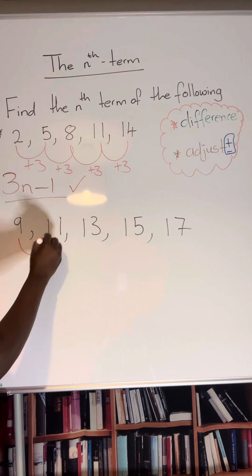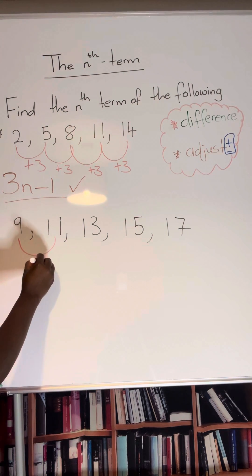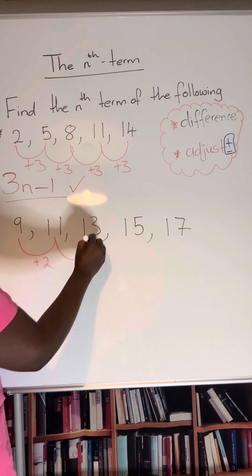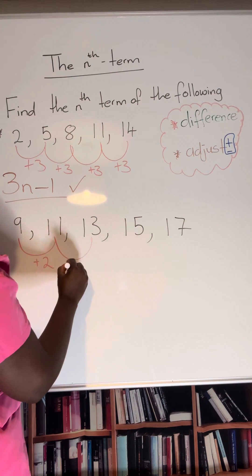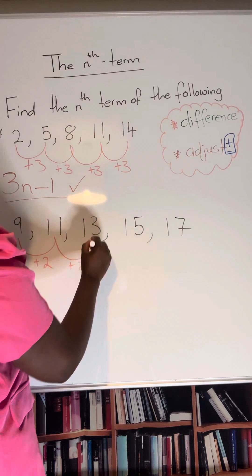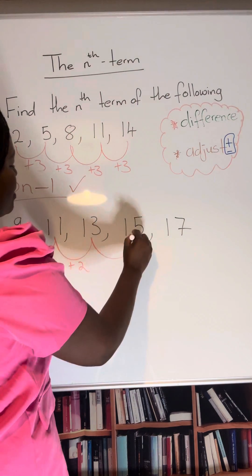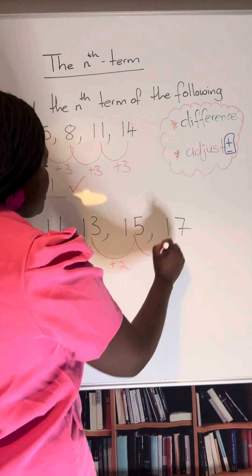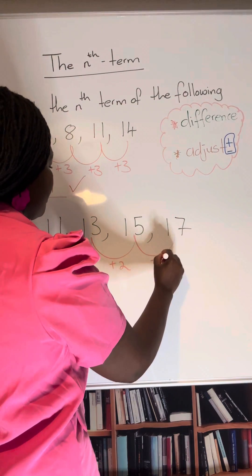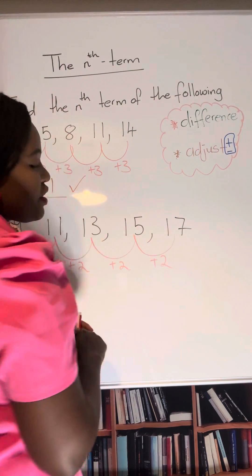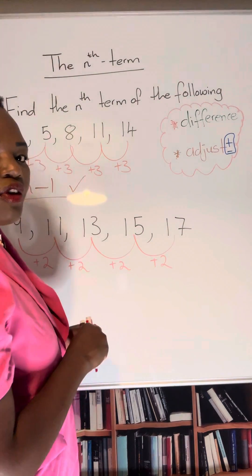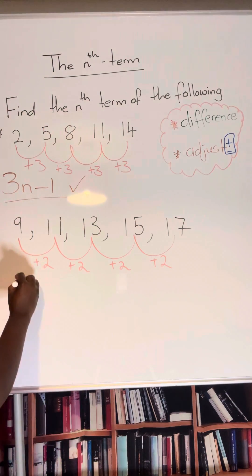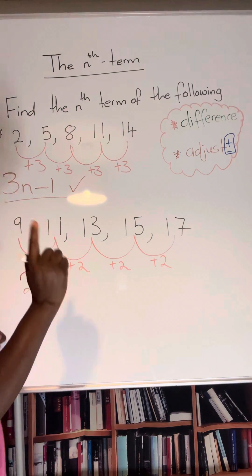From 9 to get to 11 you're simply adding 2. From 11 to 13 you're simply adding 2. From 13 to 15 you're simply adding 2. From 15 to 17 you're simply adding 2. So therefore your first part of the sequence is going to be 2n.